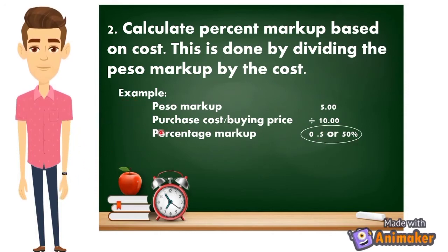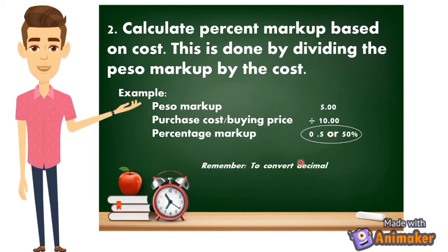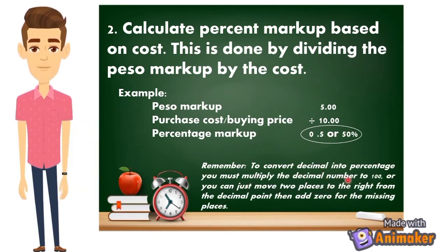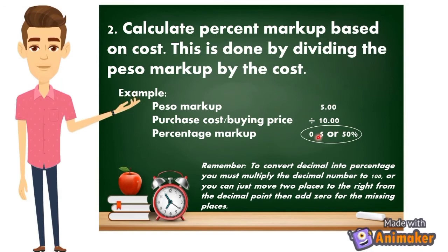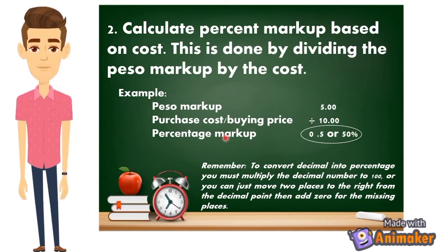To convert this decimal of 0.5 into a percentage, you must multiply the decimal number by 100. So 0.5 multiplied by 100 gives you 50 percent. Alternatively, you can move the decimal point two places to the right and add a zero for any missing places — moving one, two — giving you 50 percent. This is the percentage markup based on the given data.